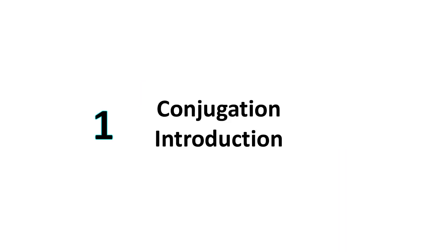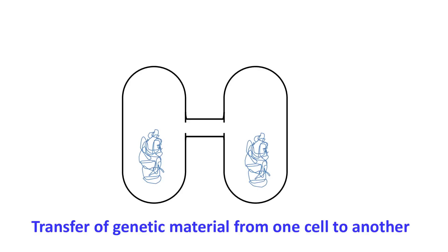The phenomenon in which the genetic material is transferred from one cell to another via direct cell-to-cell contact is called conjugation.